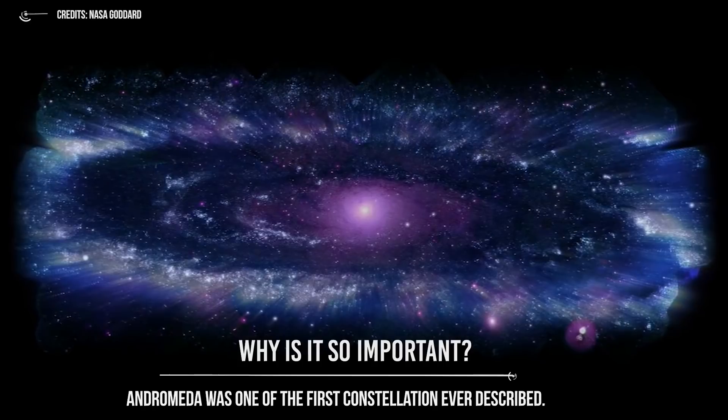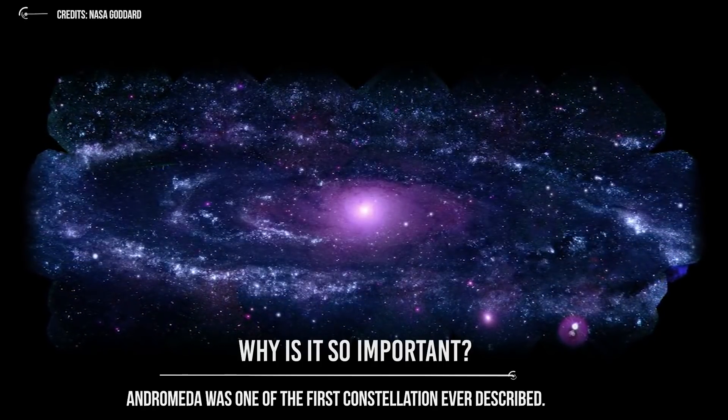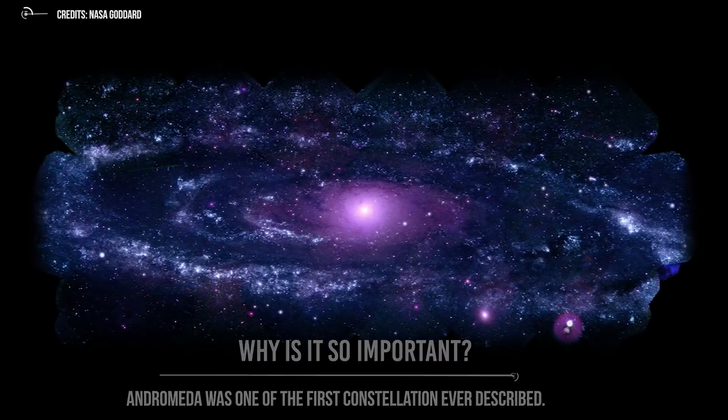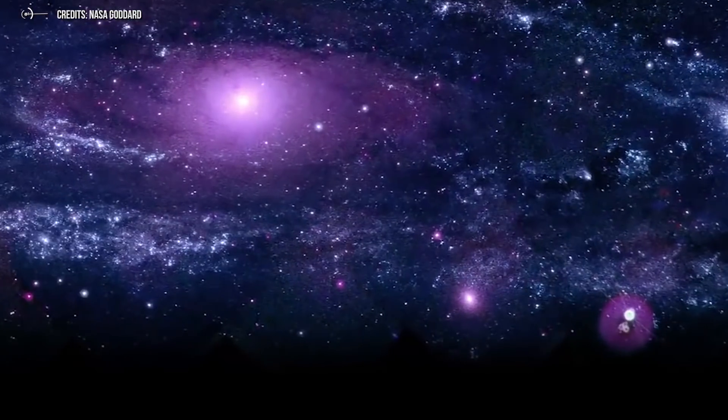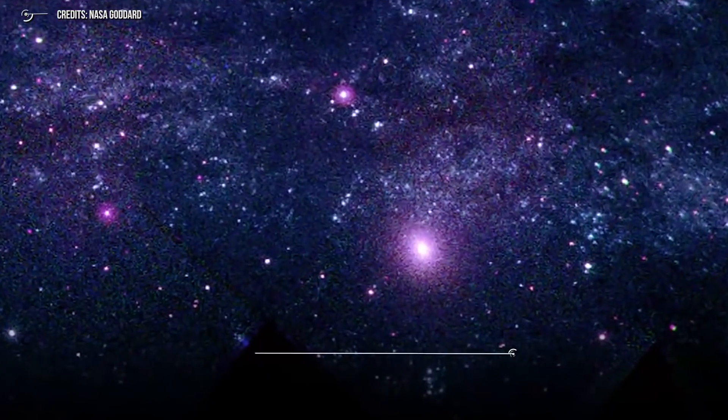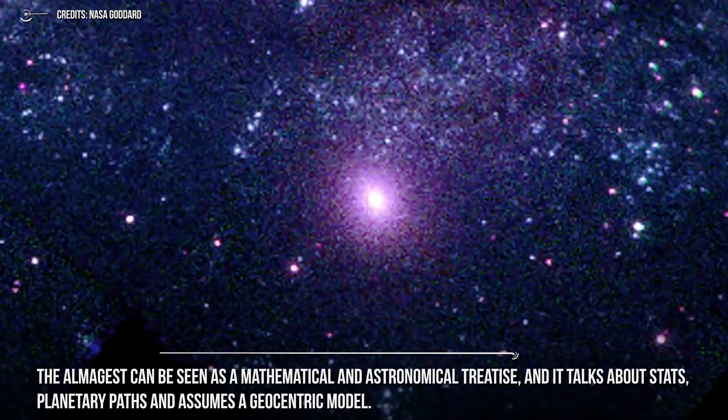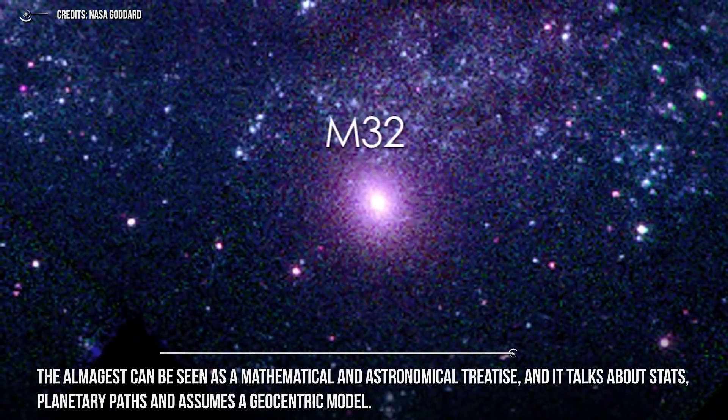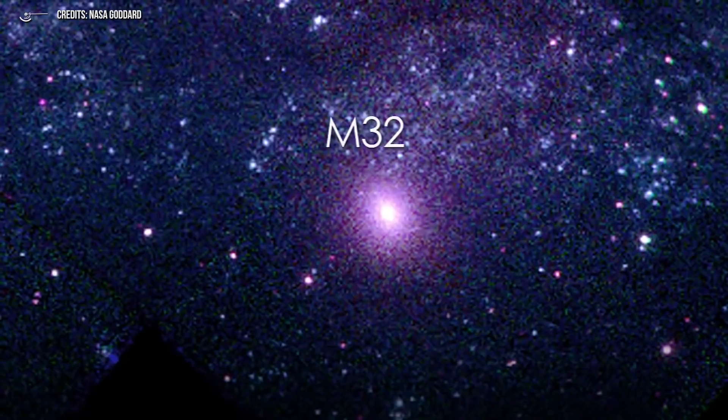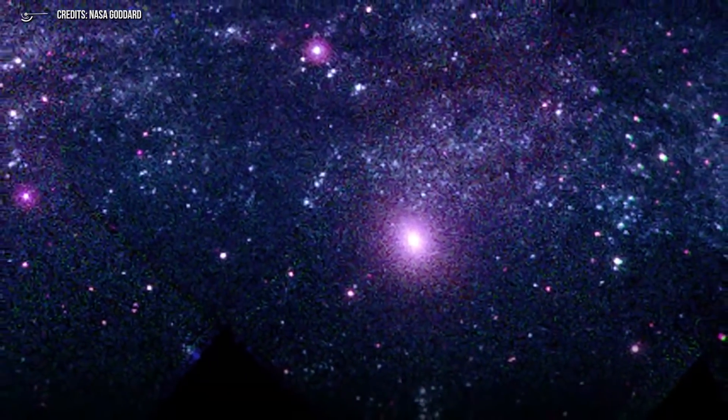Going back to our constellation, why is it so important? First of all, Andromeda was one of the first constellations ever described. In fact, the ancient Greek astronomer Claudius Ptolemy in his work The Almagest described 48 constellations and one of them was Andromeda. The Almagest can be seen as a mathematical and astronomical treatise. It talks about stars, planetary paths, and assumes a geocentric model. It is one of the most influential scientific texts in history, but also a key source of information about ancient Greek astronomy.